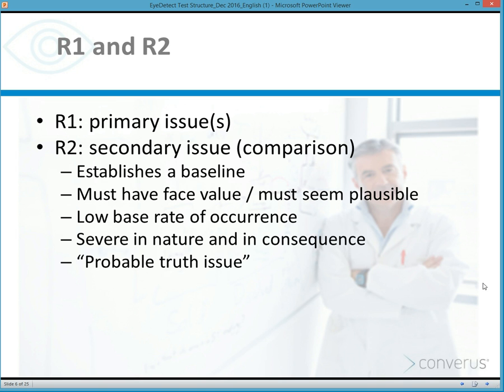Every iDetect test has a relevant or primary issue and a secondary or comparison issue. We refer to the primary issue as the R1 issue and the secondary or comparison issue as the R2 issue. A primary issue could include drug use, for example — that's a single issue, or R1.